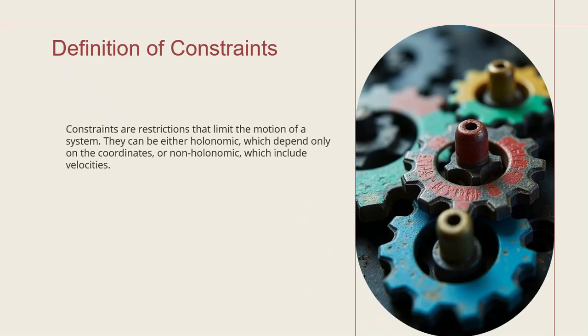What is the definition of a constraint? Constraints are restrictions that limit the motion of a system. They can be either holonomic, which depends only on the coordinates, or non-holonomic, which includes velocities. We have to remember these two important cases. Holonomic only depends on coordinates, while non-holonomic includes velocity also.